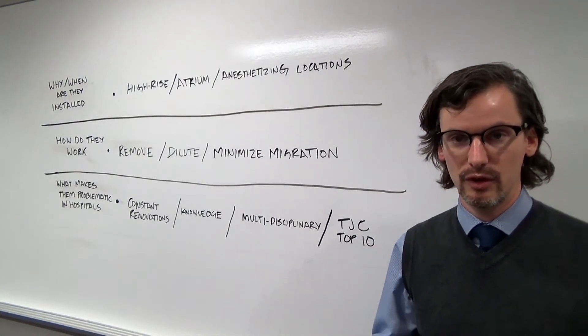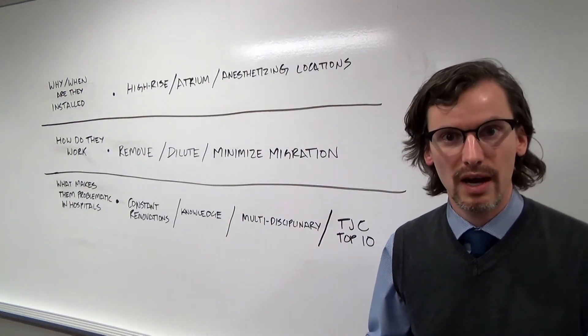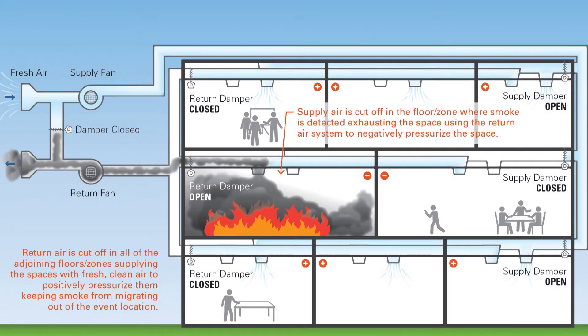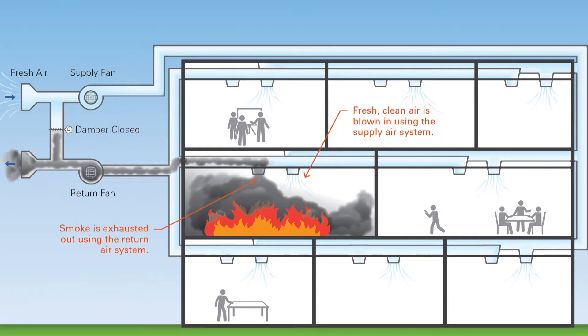There are three basic system functions. You either pressurize to maintain a barrier where smoke can't come into a zone or space, or you exhaust the smoke, physically remove it and discharge it to the outdoors, or you purge the smoke out with fresh air.